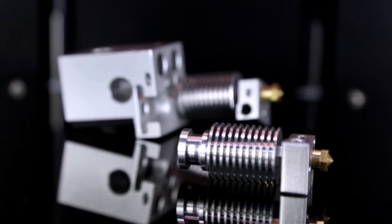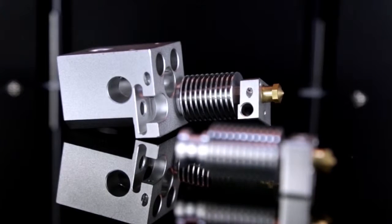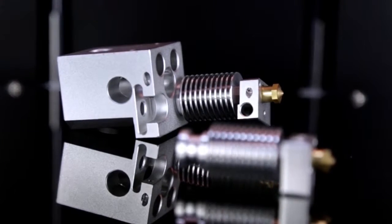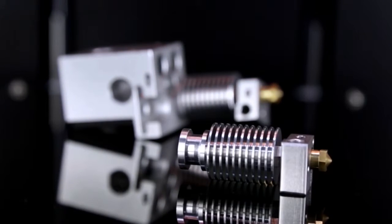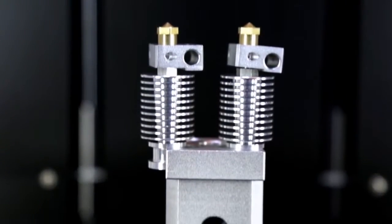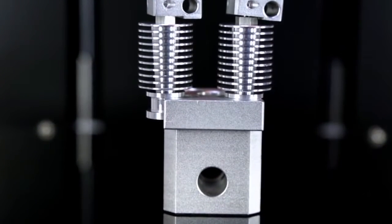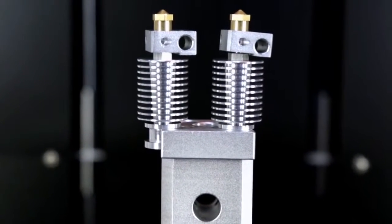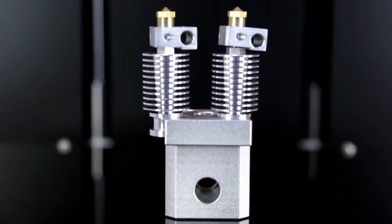What's more is that the extruders are connected with the main body by a universal slot, so that it can also be compatible with other extruders. It's just like using different lenses for one camera. With this universal slot, users can change extruders easily.